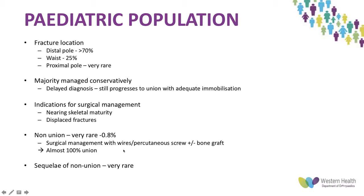In children, the most common fracture location is the distal pole, accounting for more than 70% of cases, compared to 65% at the waist in adults; proximal pole fractures are extremely rare. The majority are managed conservatively, and even in delayed diagnosis, children progress to union with adequate immobilization for an appropriate length of time. Surgery is indicated only in children nearing skeletal maturity with displaced fractures; the non-union rate is very rare at about 0.8%. With surgical management using wires or percutaneous screws with bone graft, 100% union is achieved.